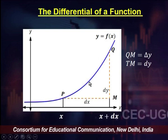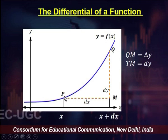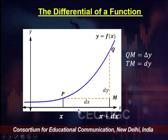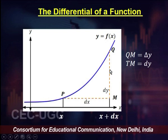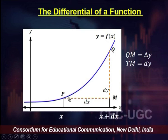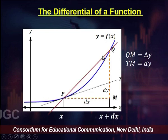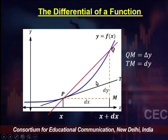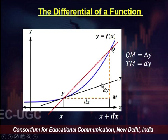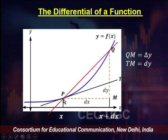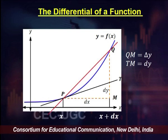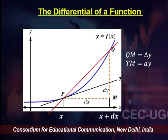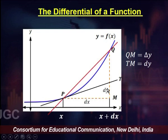Let us look at this graphically. We have function y equal to f of x shown in blue, and the movement on the curve is from p to q where x changes from x to x plus dx. The actual change in y as a result of this movement is delta y, which is the height qm. Now if I consider movement along the tangent pt — the tangent to the curve at p — the slope of this tangent is the derivative at that point, which is f prime of x.